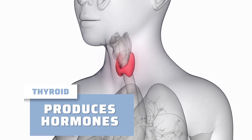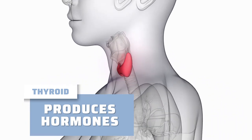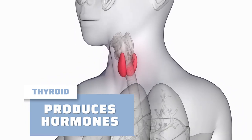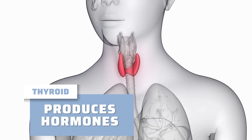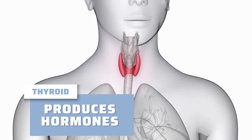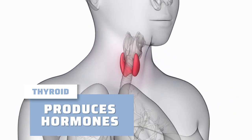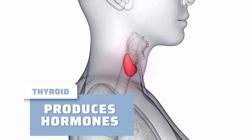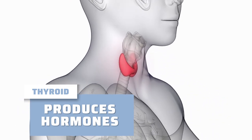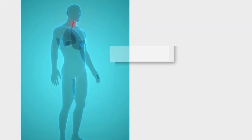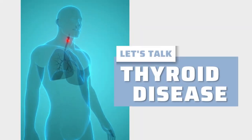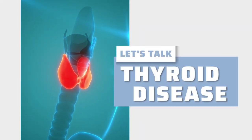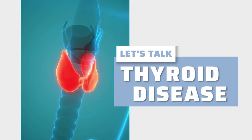Your thyroid is a small, butterfly-shaped gland situated at the base of the front of your neck. It creates and produces hormones that play a role in many different systems throughout your body. When the thyroid makes either too much or too little of these, it's called a thyroid disease.